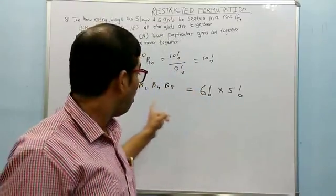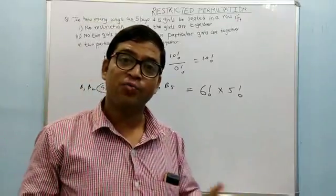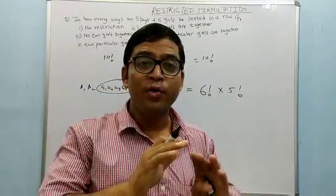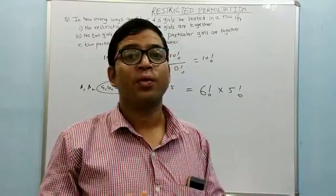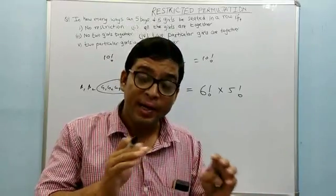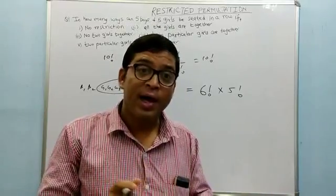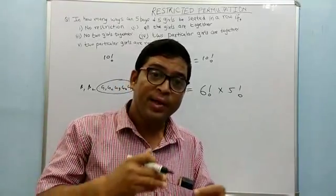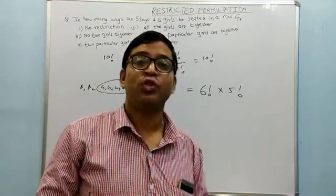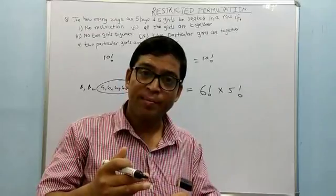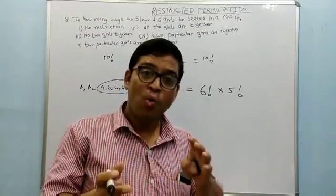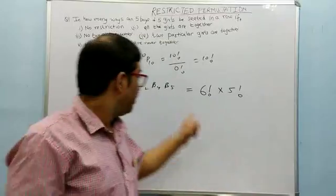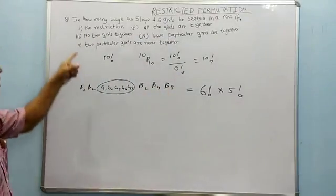Whenever you deal with such a problem, combine the things that are always together into a bag, take the rest plus the bag as one item, arrange all items, and also arrange the items inside the bag. So the answer for all girls together is 6 factorial multiplied by 5 factorial.